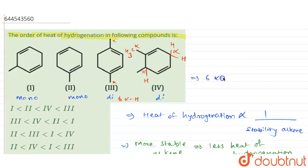For compound 4, the alpha position on one side gives three hydrogen atoms and the other alpha position also gives three hydrogen atoms, for a total of six alpha hydrogen atoms as well.